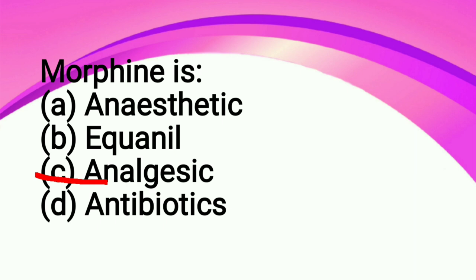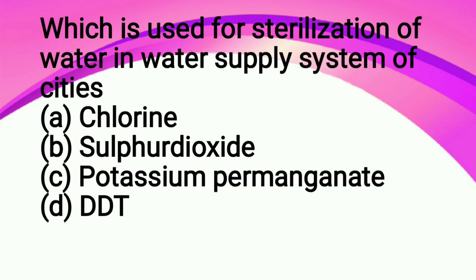Which is used for sterilization of water in water supply systems in cities: option A chlorine, option B sulfur dioxide, option C potassium permanganate, option D DDT. So the correct answer is chlorine.